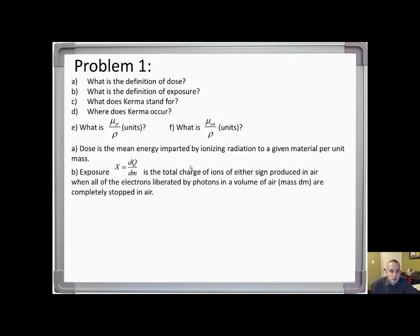Exposure is the total charge of ions of either sign produced in air when all of the electrons liberated by photons in a volume of air of mass dM are completely stopped in air. Be careful with those definitions — there are some particular aspects, like the total charge of ions of either sign.